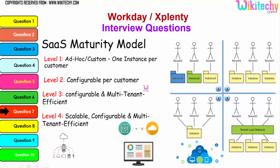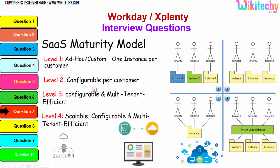You are able to see level one here — one instance per customer — and here is level two, configurable per customer. You can see the different colors representing different instances. Level three is configurable with multi-tenant architecture, with a load balancer and scalable, configurable, multi-tenant efficiency. This is your cloud computing network environment.